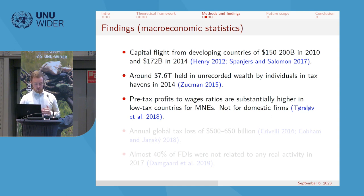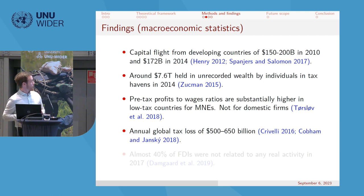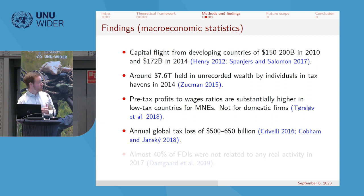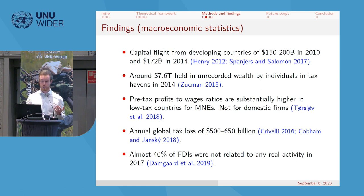The literature also finds that multinational firms are far more profitable in low-tax environments, while domestic firm profitability remains roughly flat. Crivelli and Coauthor Janský estimate global tax losses of 500 to 650 billion US dollars per year. The phantom FDI method shows that almost 40 percent of global foreign direct investments were not related to any real economic activity — passing through a transit country to reach a final destination.